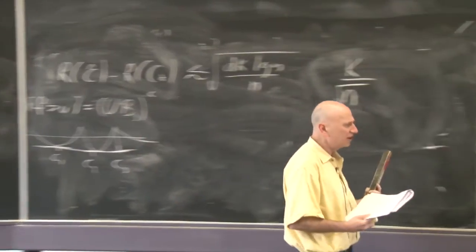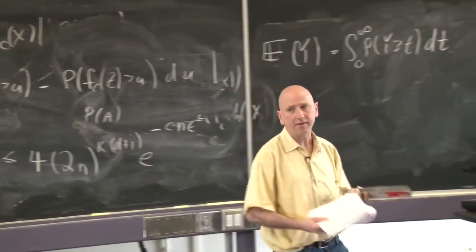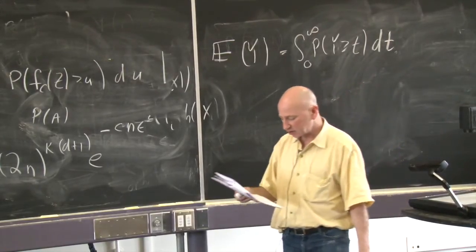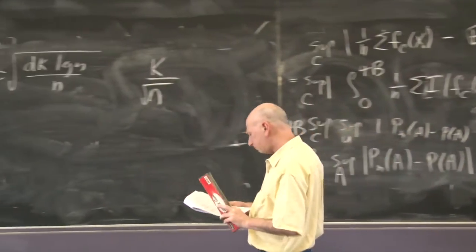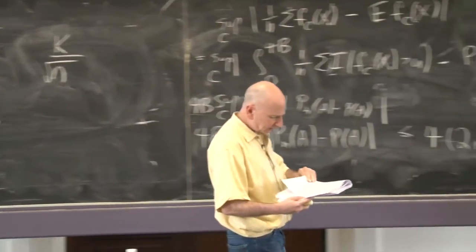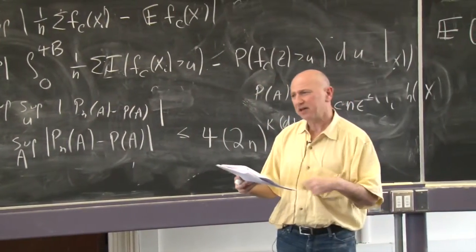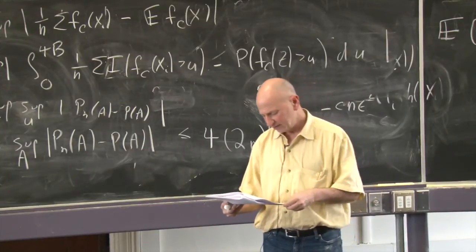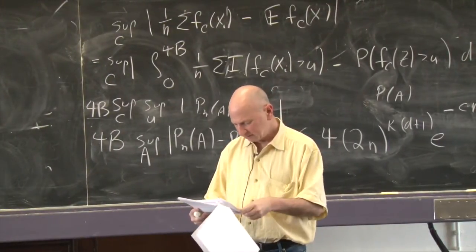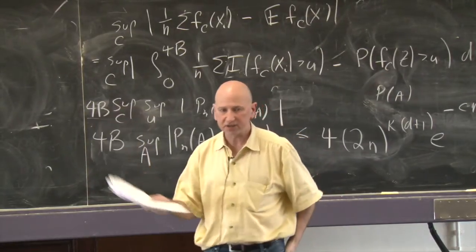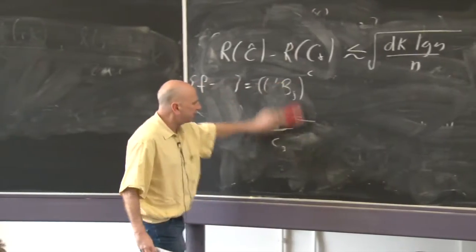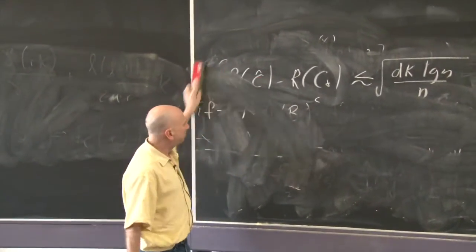Those are two examples of how concentration of measure helps us understand how empirical risk minimization and clustering behave. It gives theoretical insight on how these things actually behave. I'm not going to go through all the remaining material, but I want to mention what's there. There's an application to density estimation you can look at. There's also a discussion in Section 9 about covering numbers and bracketing numbers, which I want to mention briefly. There's actually a homework question about that, so I should definitely explain what it is.